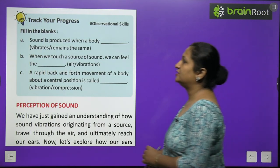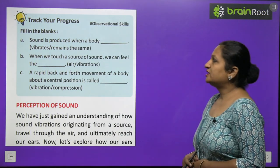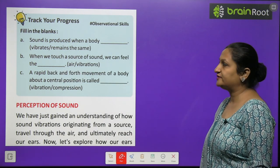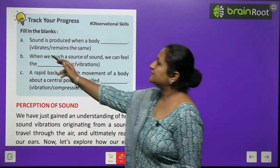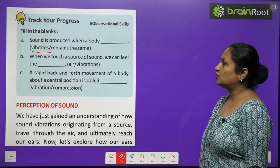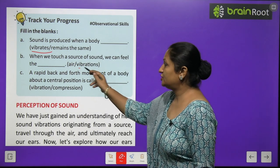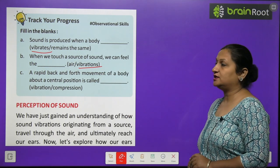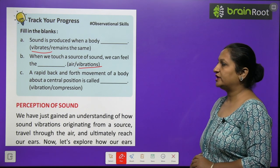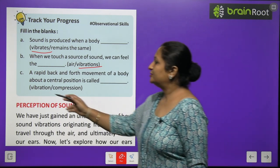Track your progress. Fill in the blanks. First one says, sound is produced when a body vibrates. When we touch a source of sound, we can feel the vibrations. A rapid back and forth movement of a body about central position is called vibrations.